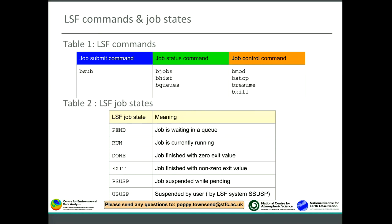Job states are an important attribute. States vary from the time you submit to when the job completes: from PEND to RUN to DONE. If not completed successfully, it will have a non-zero exit value, shown as EXIT. You can also manipulate a job by stopping and resuming it, and the state changes accordingly — for example, PSUSP meaning the job was suspended while pending.